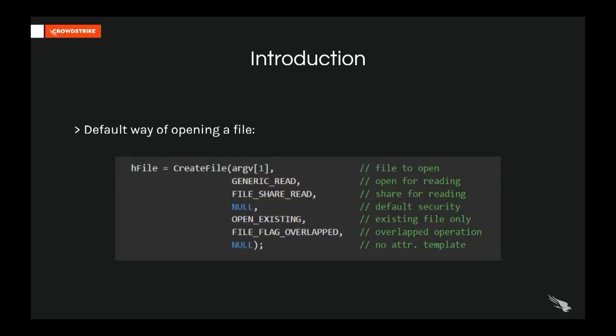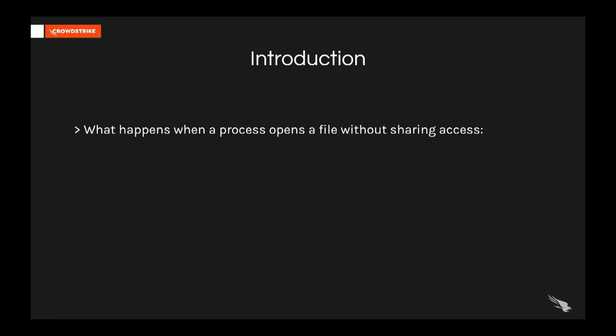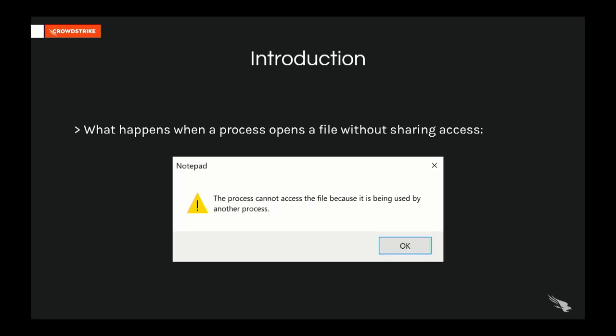We've all been stealing code from MSDN, and one of the first pieces of code I stole was a CreateFile. All I wanted to do was access the content of a file, and I had no idea what were the expected arguments. So I went to MSDN, stole a piece of code with the default way of opening a file, and without knowing it, I was accessing an existing file with OPEN_EXISTING, GENERIC_READ, sharing the access with FILE_SHARE_READ. It's only a few years later that I realized what those arguments meant, and wondered what happens when you don't share the access on the file you're opening. When you don't, if other processes attempt to access the file that you opened without the access, they would typically get a pop-up saying they can't access the file as the resource is currently used and blocked by other processes.